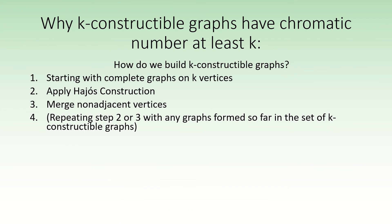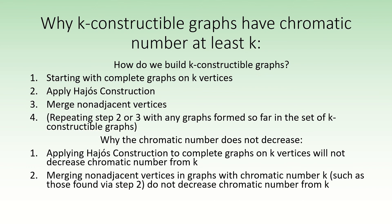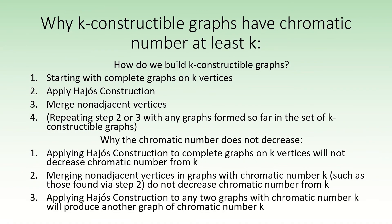In summary, the methods of generating a k-constructible graph, starting from the complete graph on k vertices, do not decrease chromatic number. When we apply the Hayosh construction to the complete graphs to form our first non-complete k-constructible graphs, we get a graph with chromatic number k. Then if we choose to apply the operation of merging non-adjacent vertices, we would be doing so to a graph with chromatic number k, meaning the resulting graph also has chromatic number k. Similarly, if we do the Hayosh construction again, we operate only on graphs with chromatic number k. There's no way to escape the grip of chromatic number k after starting with the complete graphs on k vertices.